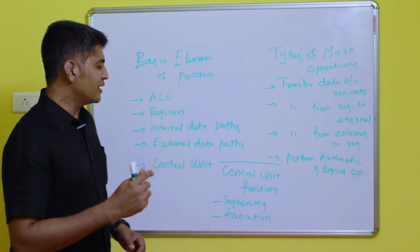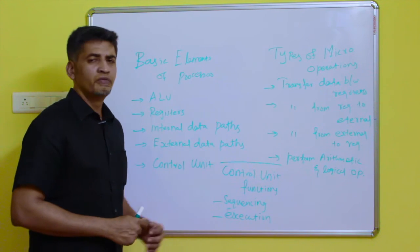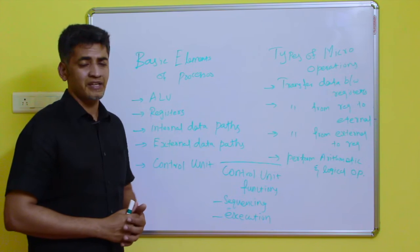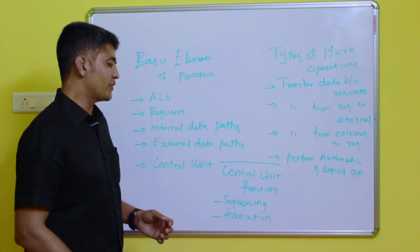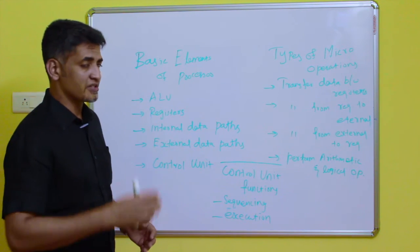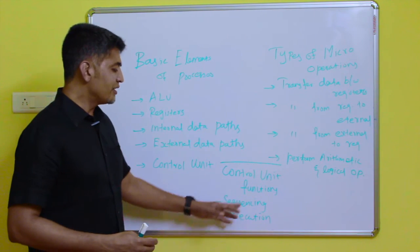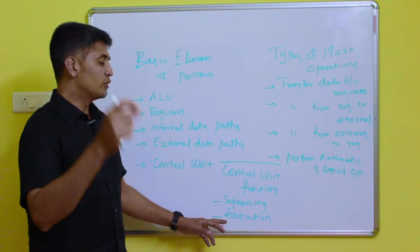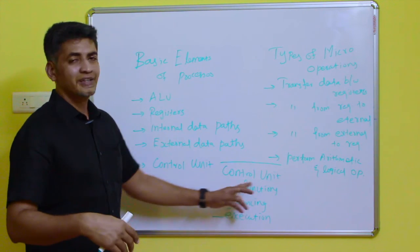The third topic is control unit functions. The control unit performs two functions: sequencing and execution. Sequencing of micro operations is the first function, and executing or performing the micro operations is the second. Both of these functions are controlled by control signals issued by the control unit.